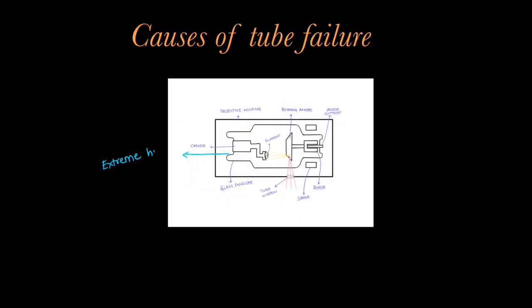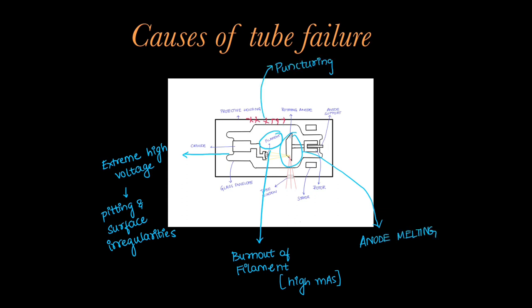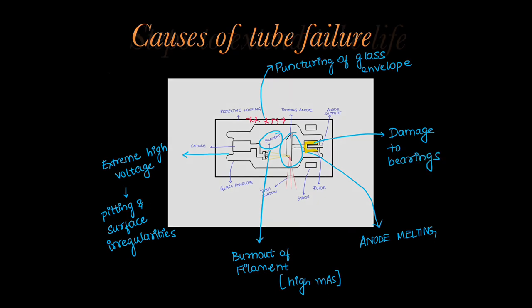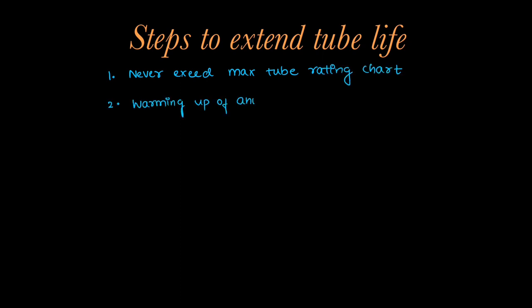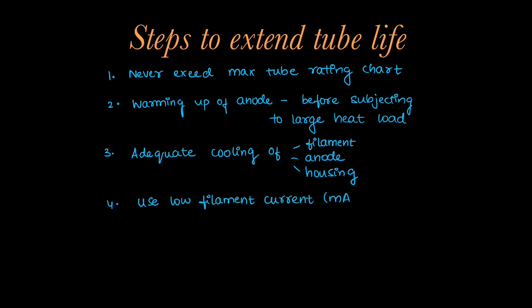Now we will learn about the causes of tube failure. Extreme high voltage in the cathode can cause pitting or irregularity of the surface. The filament can burn out at high filament currents. Anode melting can occur due to the electron beam. There can be puncturing of the glass envelope, and damage to the bearings of the rotating anode. To extend tube life: never exceed the maximum tube rating chart values of KVP and MAS; warm up the anode before subjecting it to a large heat load; ensure adequate cooling of the filament, anode, and housing before the next exposure; use low filament current for each exposure; and do not run the anode unnecessarily.